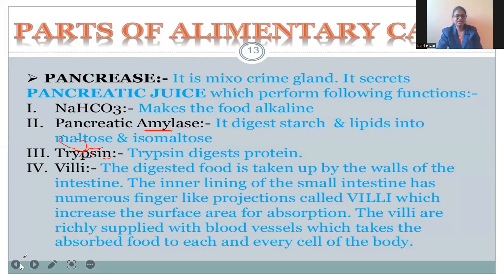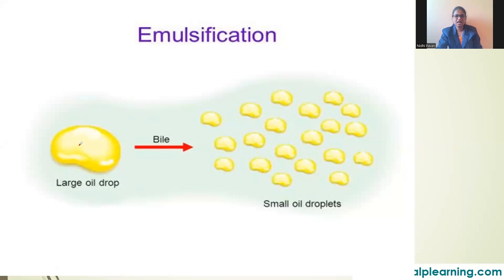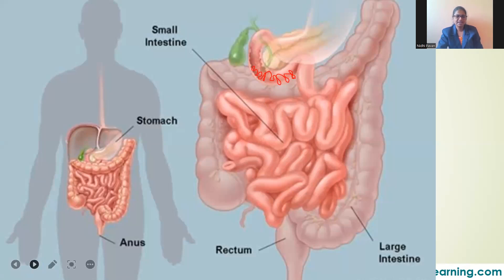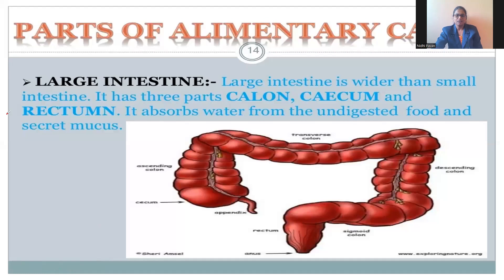Emulsification means larger fat molecules are converted into smaller fat molecules by the action of bile. Inside the wall of the small intestine you can see small finger-like projections called villi. These villi help in the absorption of food. This is a detailed image of the villi structure.